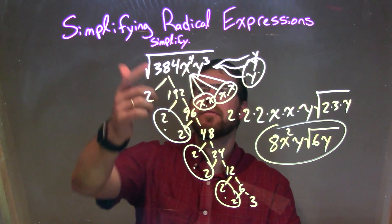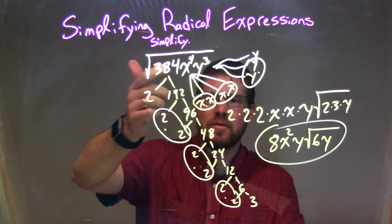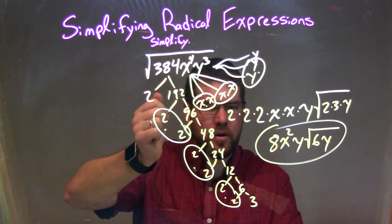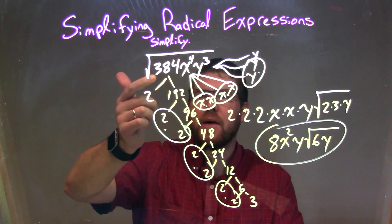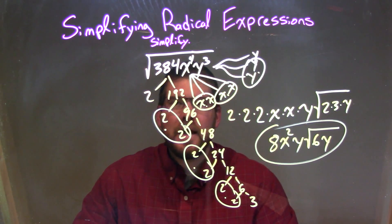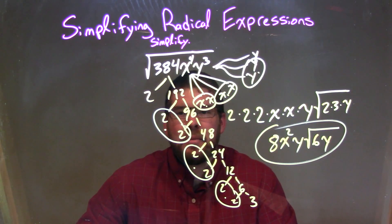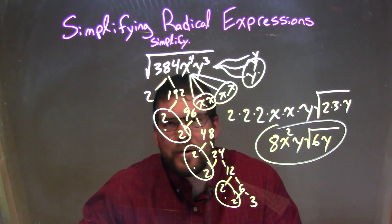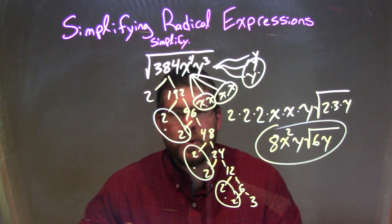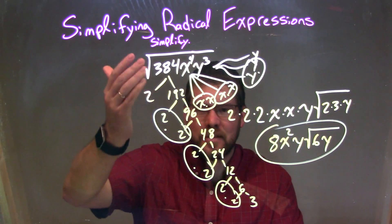So let's recap. We started with the square root of 384 x to the 4th y to the 3rd. We performed prime factorization on 384. If you could have broken this down using 4, 8, or 6, that works too — I just went with 2.